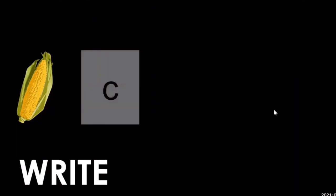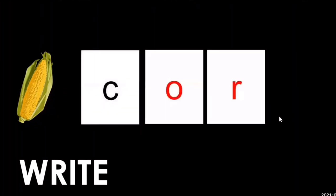And then same thing with the write. So the word is corn. What are the sounds in corn? C, OR, N, corn. What's the first sound? C. What's the second sound? OR. What's the third sound?